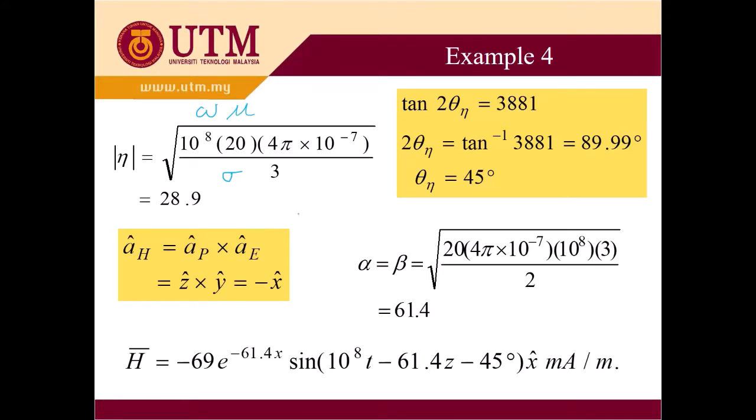And the direction of propagation here is basically a_p equal to a_E cross a_H. We know that E is Y and a_p is Z. So this is X, Y, Z as usual. This is the sequence. So Z is equal to Y cross, basically minus X. Because in this sequence, the answer is minus X.